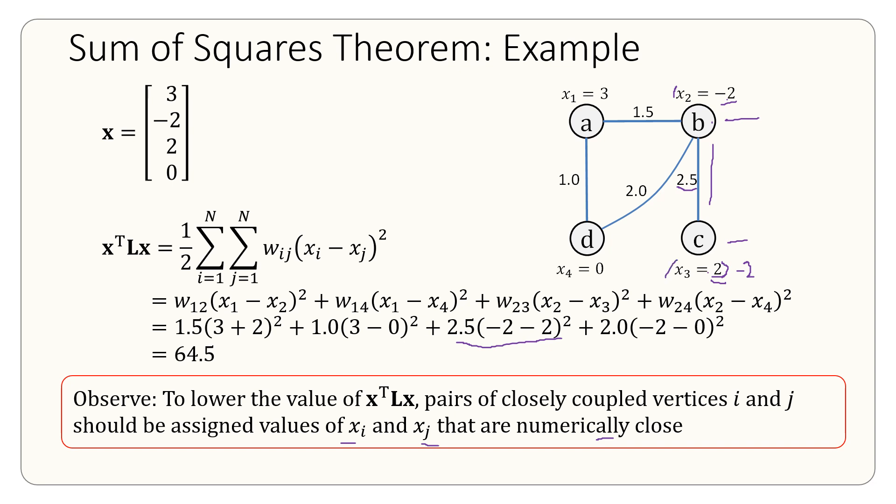If x3, this value here were also to be replaced with negative 2, then this would disappear altogether. So instead of 64.5, this would reduce by 40, so it would be 24.5.